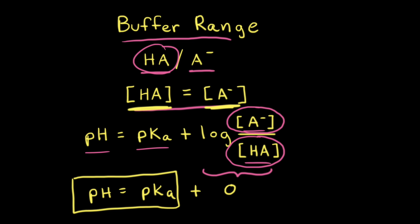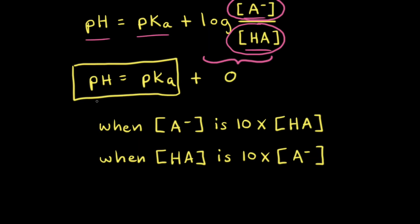So we usually try to choose a buffer with a weak acid that has a pKa value close to the desired pH of the solution. Buffers are effective at resisting large changes in pH when the pH is approximately equal to the pKa of the weak acid. However, if the concentration of one component of a buffer is more than 10 times the concentration of the other component in a buffer, buffers are not effective at resisting large changes to pH.